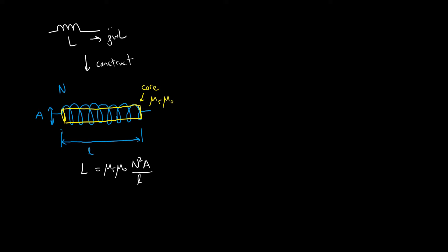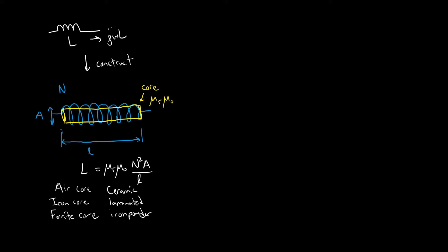There are several core materials you could use: an air core inductor, an iron core, a ferrite core, ceramic, laminated steel — people often laminate metallic cores to reduce eddy currents — and iron powder cores. The choice of core material strongly affects the performance of the inductor and what it can be used for.